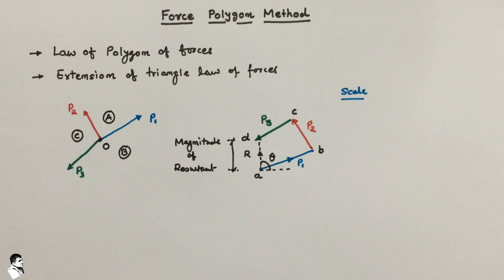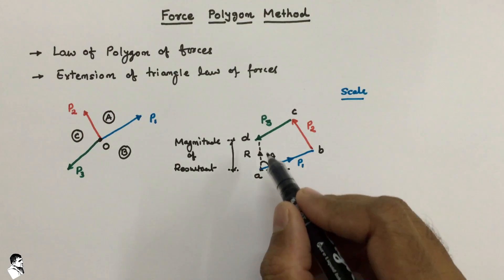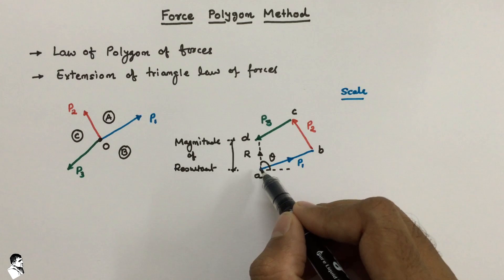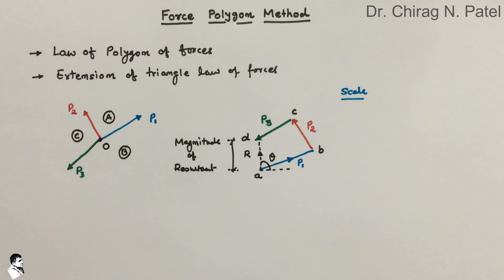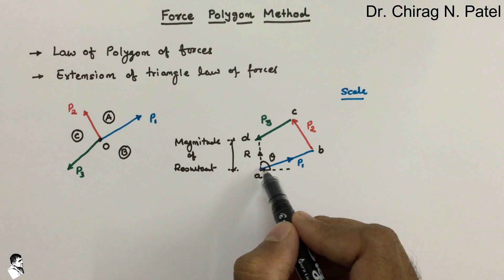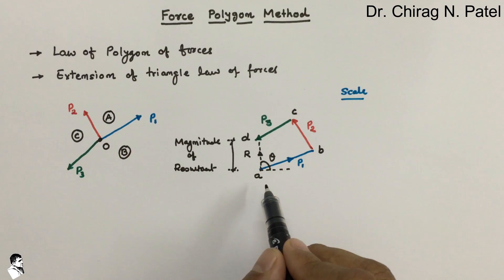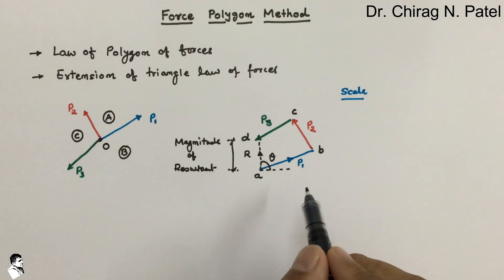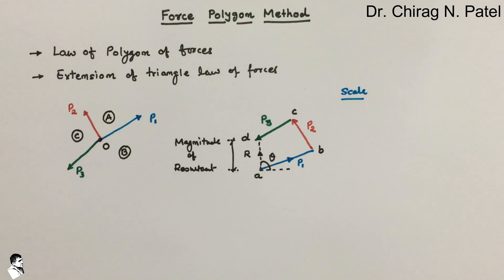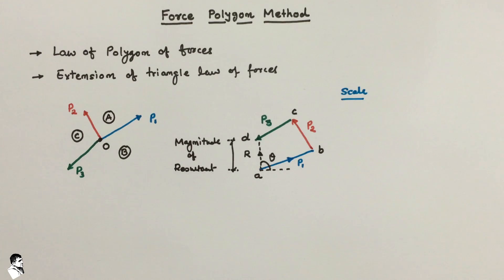A force polygon is said to be a closed polygon if the polygon formed by the forces results in a closed figure — meaning the endpoint reaches back to the starting point. If the resultant is not zero, we have a non-closed polygon. If the polygon is closed, the value of the resultant is zero, and this is known as a closed polygon.